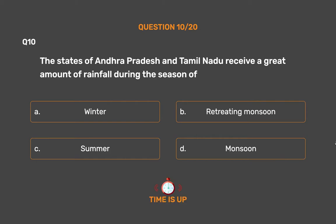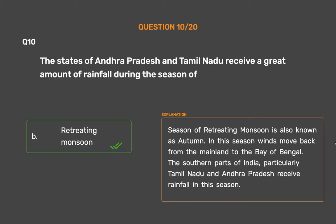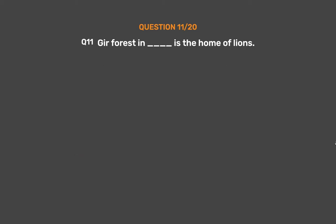The correct answer is Option B: Retreating monsoon. The season of retreating monsoon is also known as autumn. In this season, winds move back from the mainland to the Bay of Bengal. The southern parts of India, particularly Tamil Nadu and Andhra Pradesh, receive rainfall in this season.